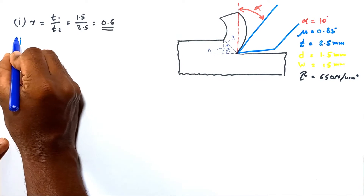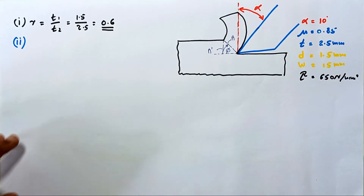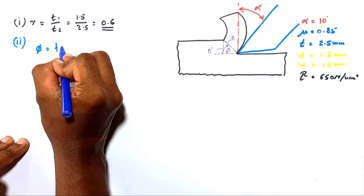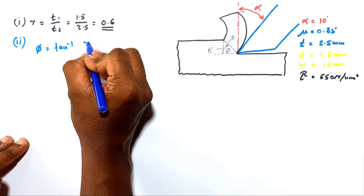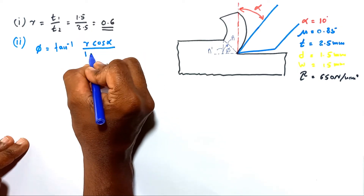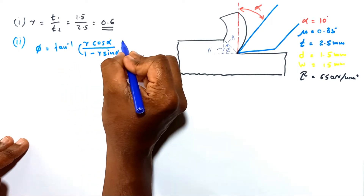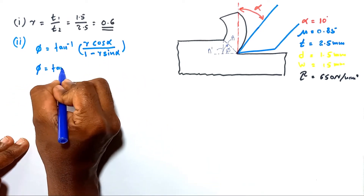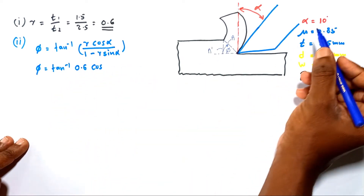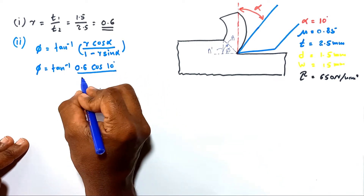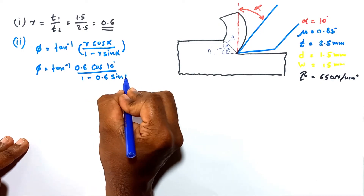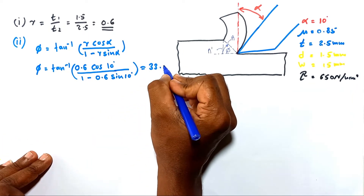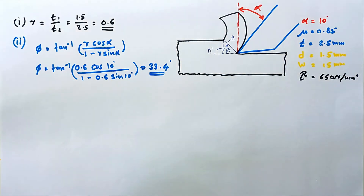The second part requires finding the shear angle φ. The formula is φ = tan⁻¹(r·cosα / (1 − r·sinα)). Substituting the values: r = 0.6, α = 10°, we get φ = tan⁻¹(0.6·cos10° / (1 − 0.6·sin10°)) = 33.4°. This is the answer for the second part.